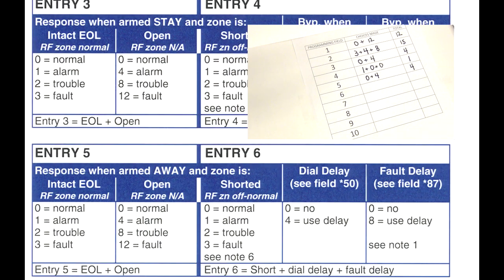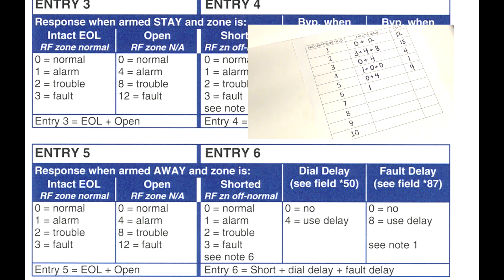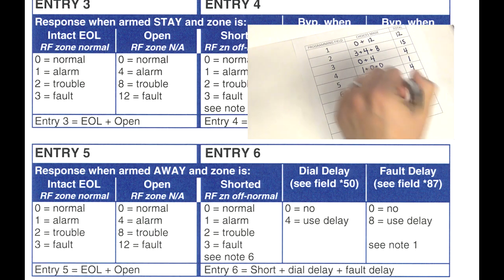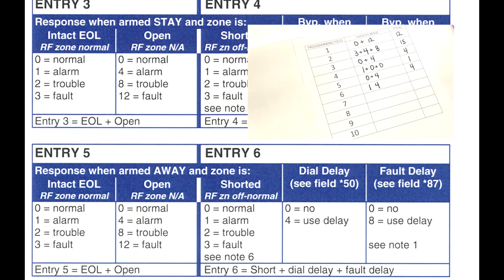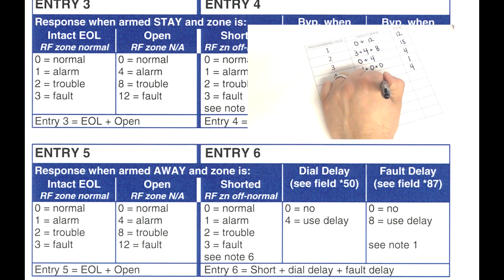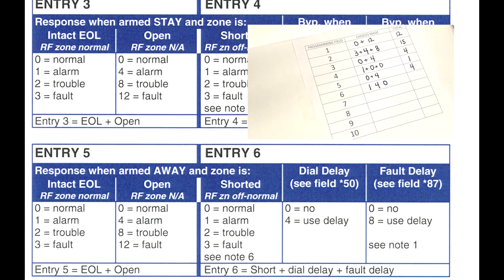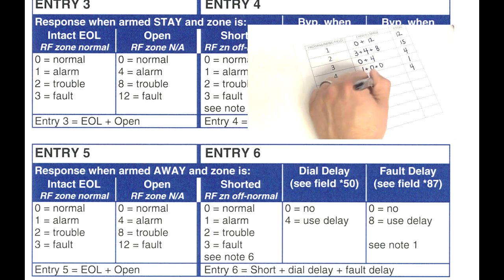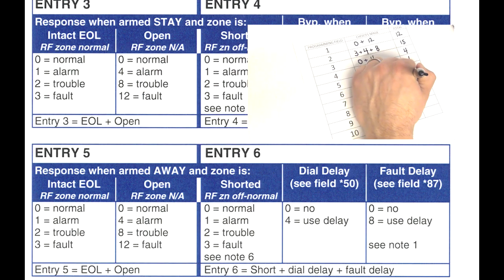Programming field six. Response when armed in away mode and zone is shorted — that should again trigger an alarm, so enter in a one. Dial delay — when the system sees an alarm condition it will delay dialing central station. You always want this, as it will drastically reduce false alarms, so enter in a four. Fault delay — we do not want to use a fault delay, so enter in a zero. One plus four gives us a total of five for field six.